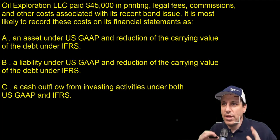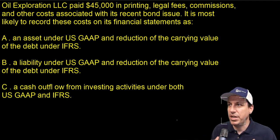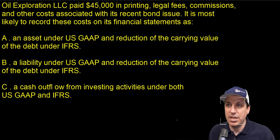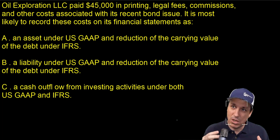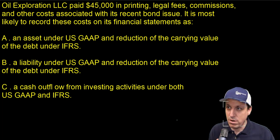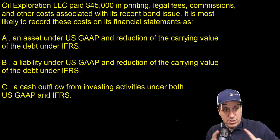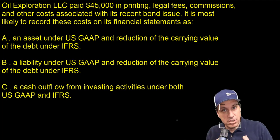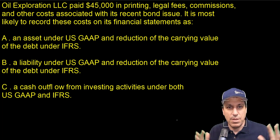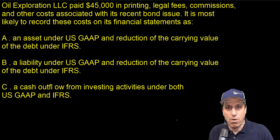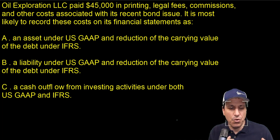Oil Exploration LLC paid $4,500 in printing, legal fees, commissions, and other costs associated with a recent bond issue. The question asks how it's most likely to record these costs in its financial statements. So here's the key: there's debt being issued and there's a cost associated — you've got commissions, all sorts of other documents and things that people are going to charge you for.